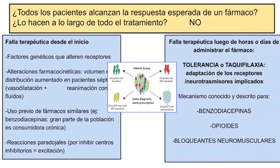¿Por qué falla a veces desde el principio? A veces por alteraciones genéticas que alteran los receptores. A veces por alteraciones farmacocinéticas: cuando el volumen de distribución está aumentado, la concentración en plasma y en los sitios de acción es más baja — algo que ocurre en pacientes sépticos agravado por la reanimación con fluidos. A veces por uso previo de fármacos similares: gran parte de la población consume benzodiazepinas crónicamente, entonces sus receptores ya están adaptados y responden menos al midazolam. Algunos tienen reacciones paradójicas — al inhibir un centro inhibitorio, paradójicamente se excitan más.